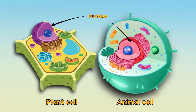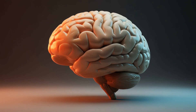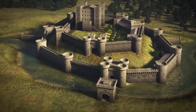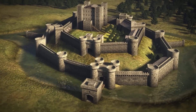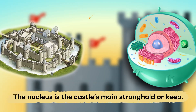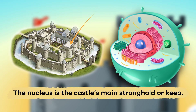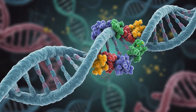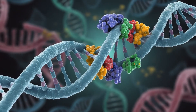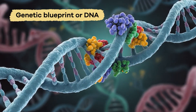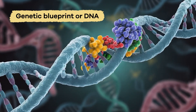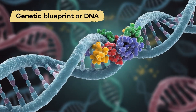The nucleus runs the cell, kind of like a brain. In our castle analogy, it is the castle's main stronghold or keep. It contains the cell's genetic blueprint, or DNA.